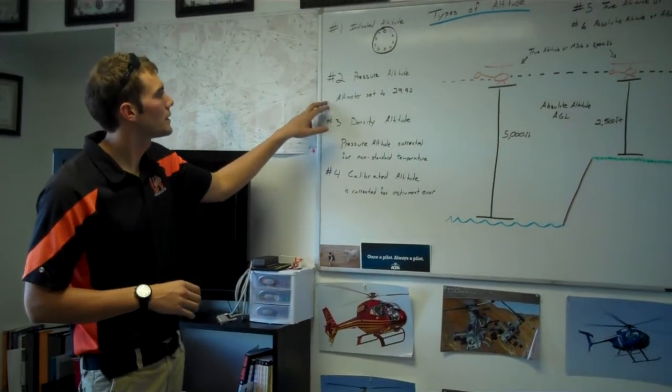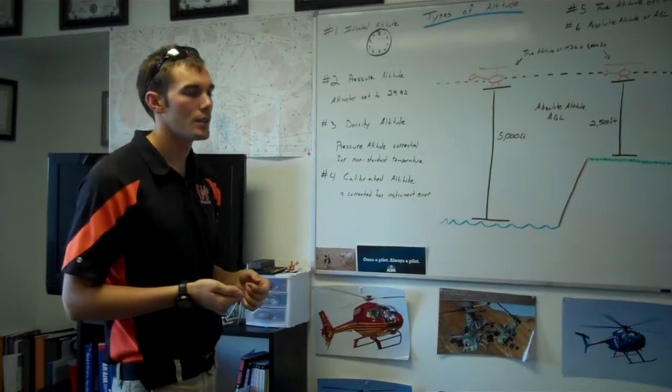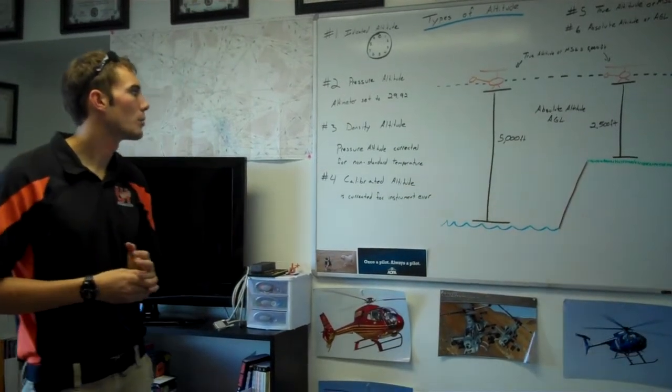Next is going to be pressure altitude. This is what happens when you set your altimeter to 29.92. It's just correcting for any non-standard pressure.